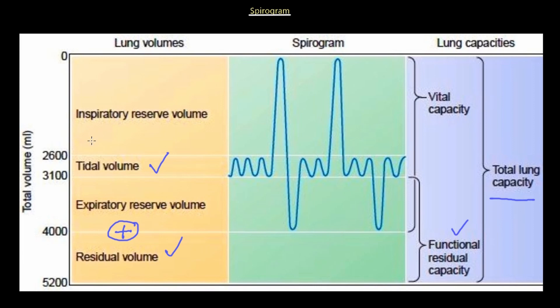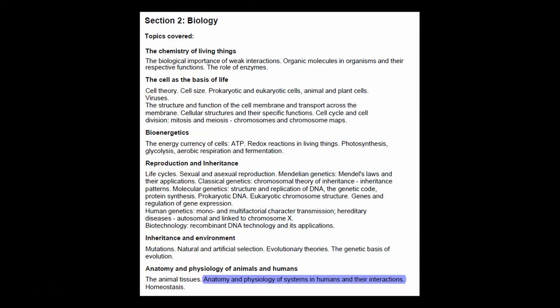Inspiratory reserve volume is the additional air you can breathe in beyond normal tidal inhalation. Vital capacity is expiratory reserve volume plus tidal volume plus inspiratory reserve volume — fully breathing in then fully breathing out. These three capacities and four volume types you should know by heart. This concludes the lecture on the respiratory system; the next video will discuss diseases of the circulatory and respiratory systems.